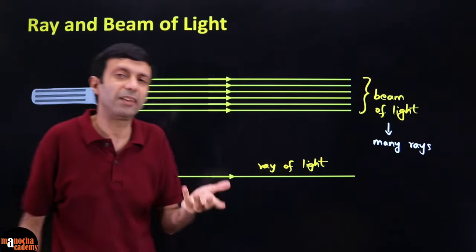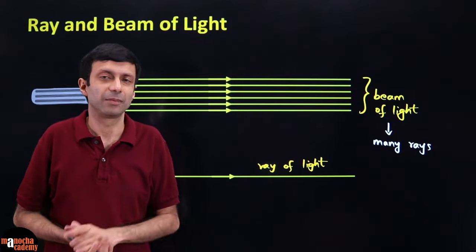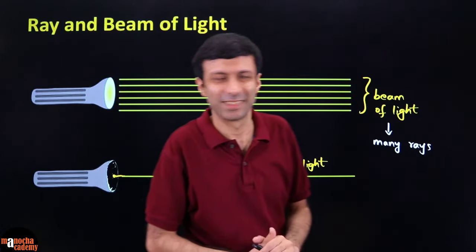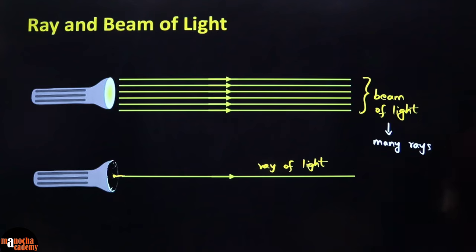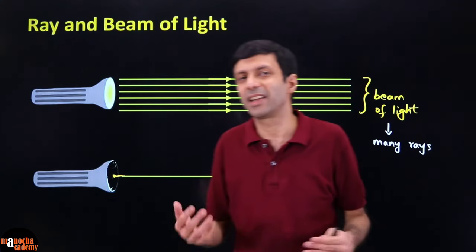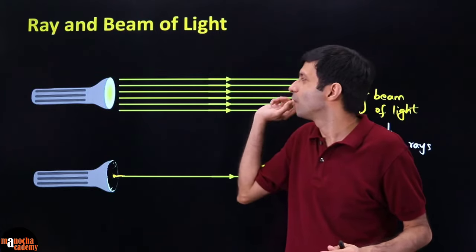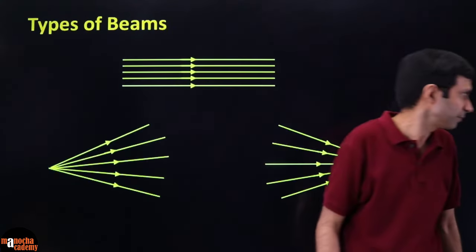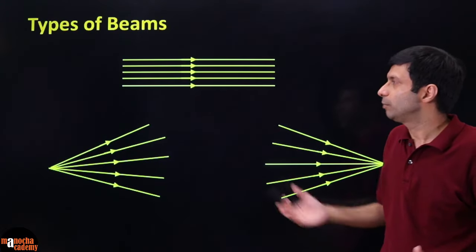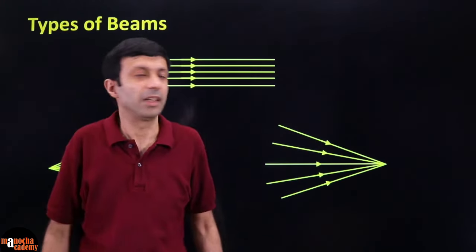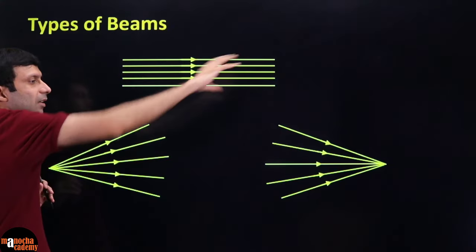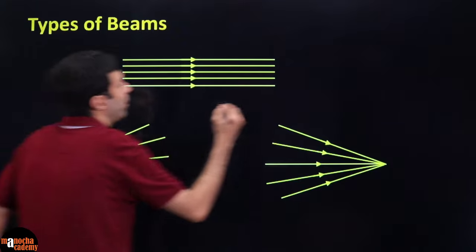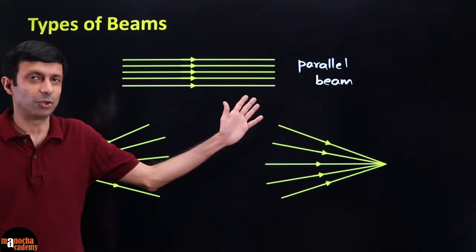How many rays make up a beam? The correct answer is infinite — uncountable rays. A beam can be divided into three types: a parallel beam, where all rays are parallel to each other; a divergent beam, where rays emerge from a point and spread away; and a convergent beam, where rays meet at a single point.